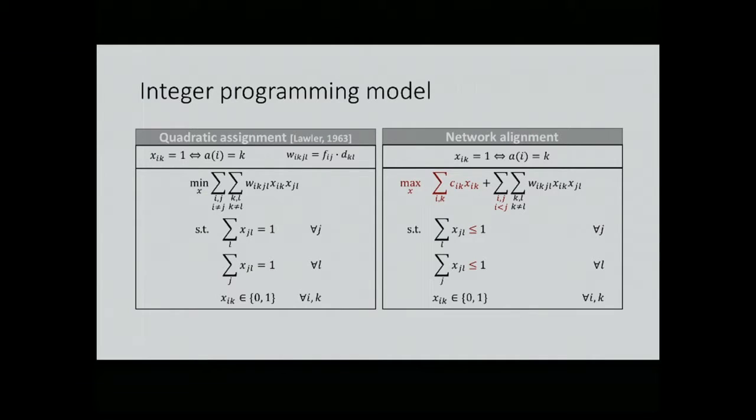We have some differences which are highlighted in red here. First, we don't minimize, we maximize, but this is not a real difference. Then we have an additional linear term in the objective function - again, not a problem. Our matrix is symmetric in network alignment, which is just nice. We can forget about half the variables. Then we don't have an assignment, we have a matching, so we have a partial injective function - we have less than or equals instead of equalities. But the big difference is really hidden. My W matrix is sparse because I use the restricted input. And only then will it work nicely.